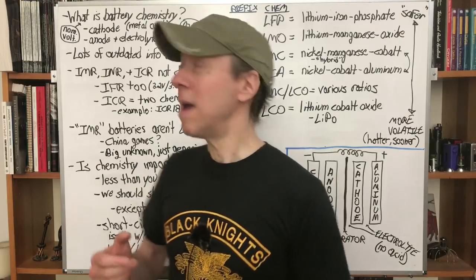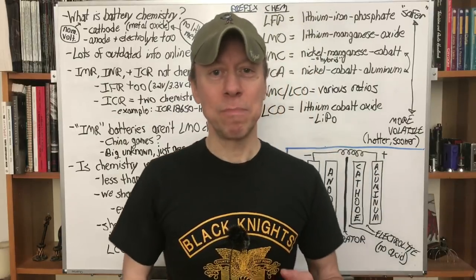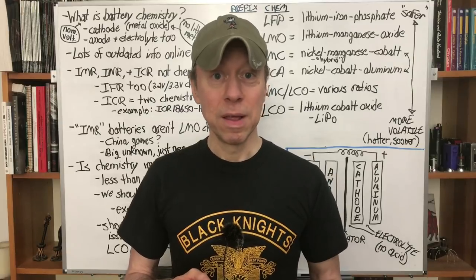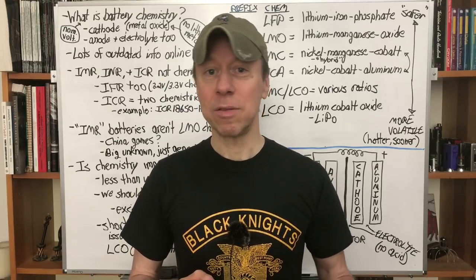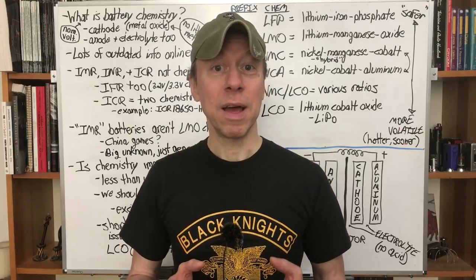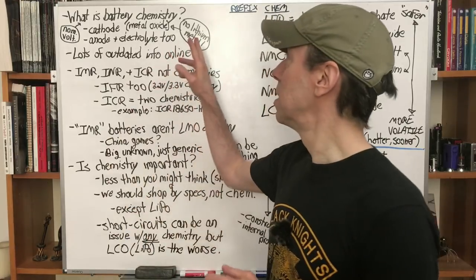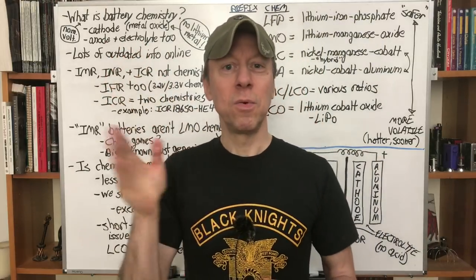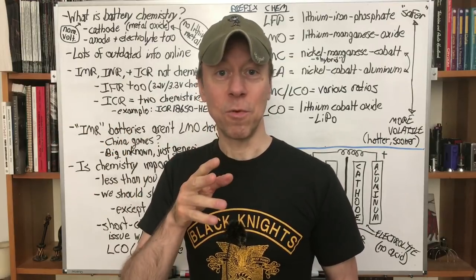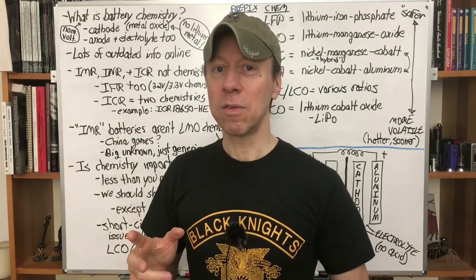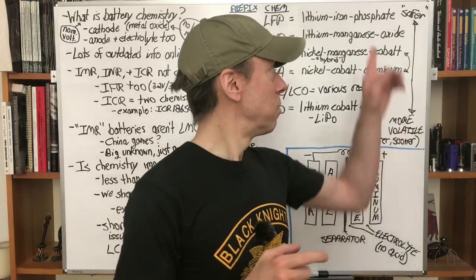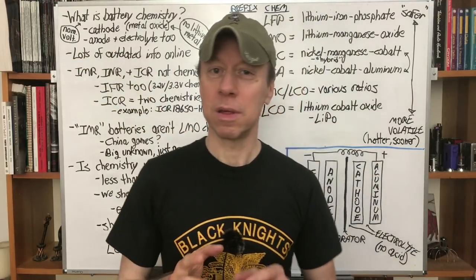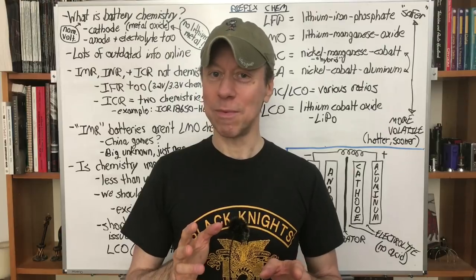What is battery chemistry? Primarily it's the cathode — the positive part of the battery — the material used for the positive part. That is an oxide of a metal; it could be manganese, cobalt, nickel, aluminum, etc. Those will primarily define it. But it's also the anode, the negative part of the battery, and the electrolyte — the fluid that the lithium ions move back and forth through. But primarily it's what the positive material is.